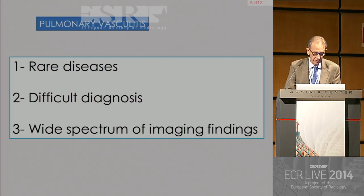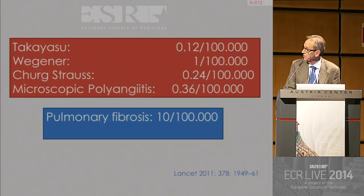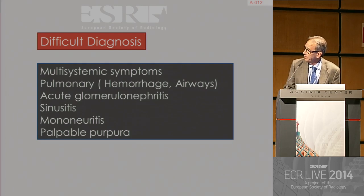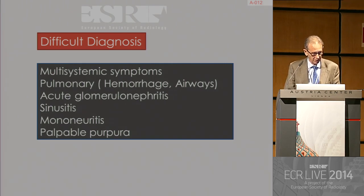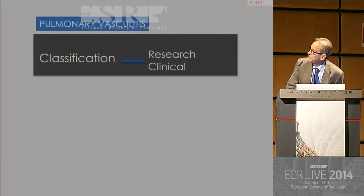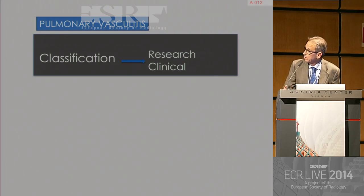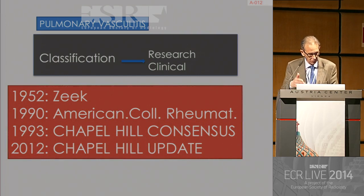Pulmonary vasculitis are rare diseases, difficult to diagnose, and have a wide spectrum of imaging findings. The incidence of these diseases is extremely low — pulmonary fibrosis is ten times more frequent than this type of vasculitis. The diagnosis is difficult because there are multisystemic symptoms, multiple pulmonary manifestations, and symptoms involving other organs like the kidneys and sinusitis. We need classification for research — to have groups well defined — and also for clinical purposes, so the clinician knows how to treat patients. Classifications have been ongoing since 1952, with the last major update around 2012 with the Chapel Hill update.